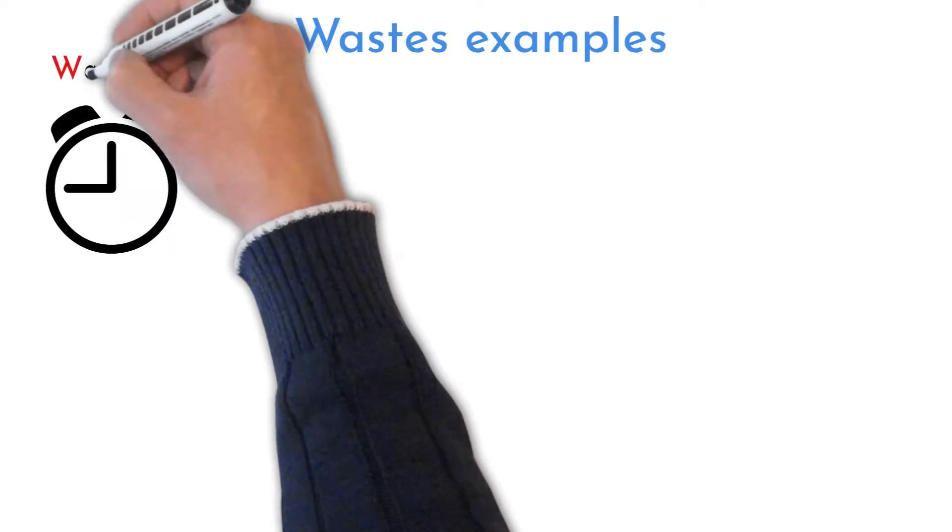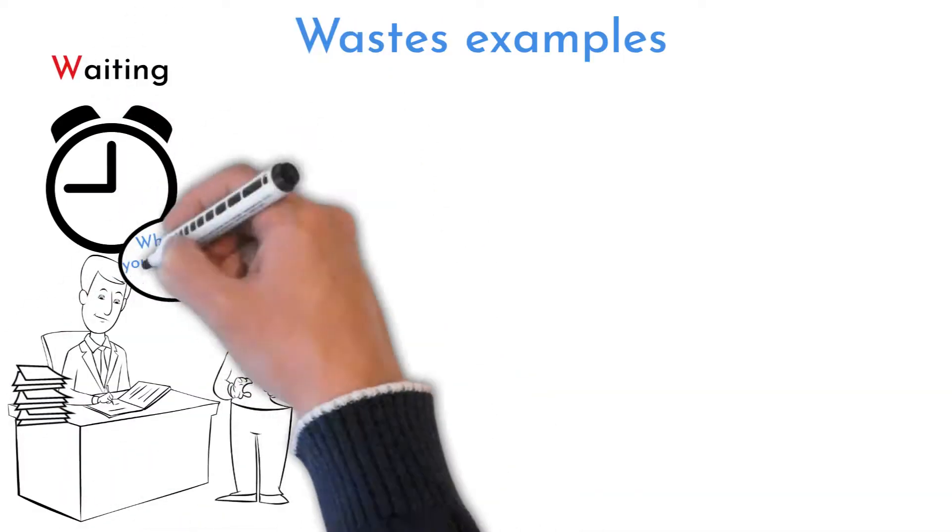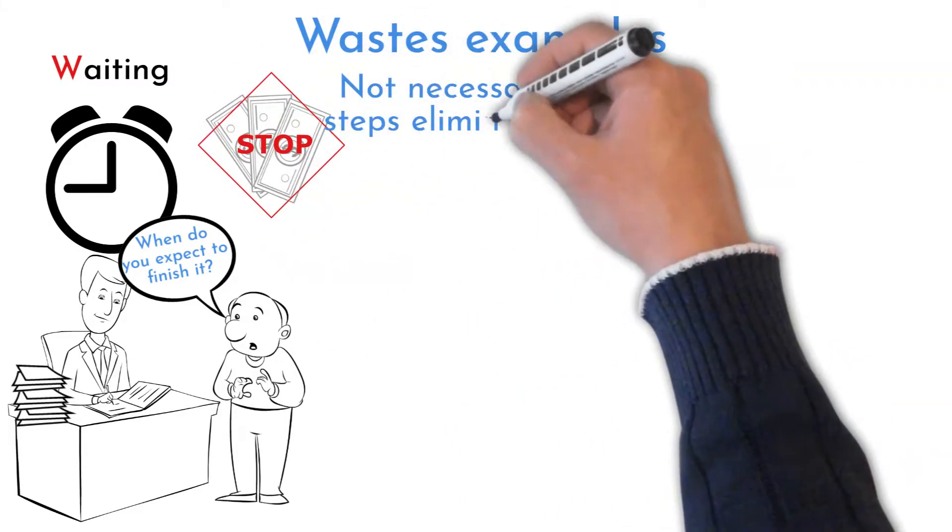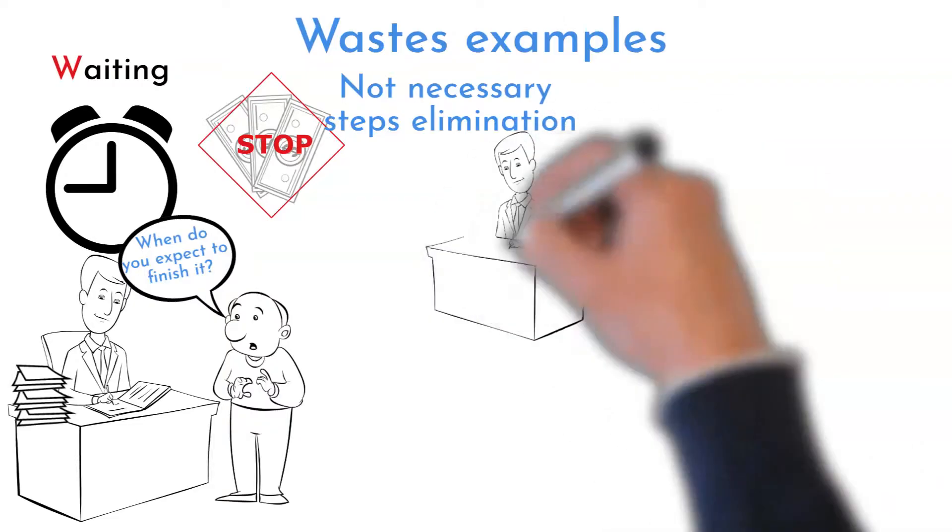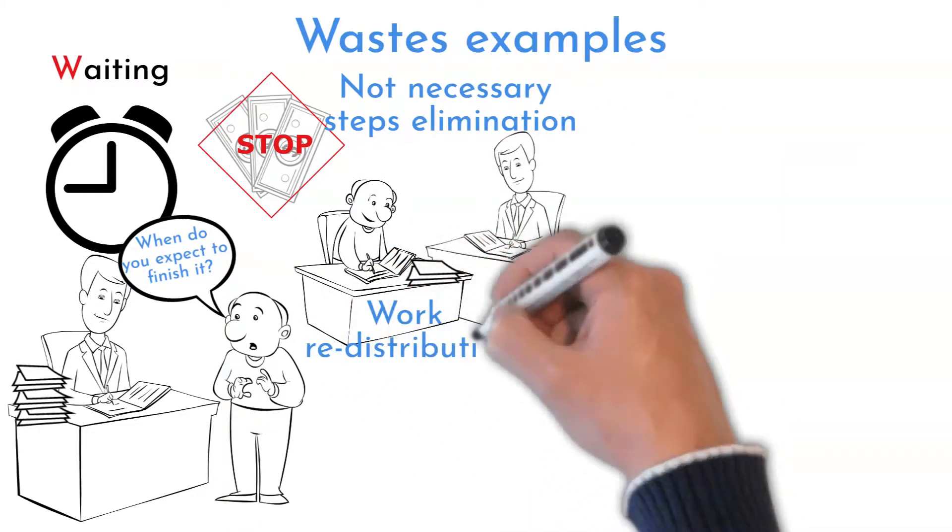Time losses created by waiting for previous or next step in the process is waiting waste. It is the time you pay but not adding any value. Try to speed up or level the slowest bottleneck processes to the same cycle time. If not possible, add shift, operator, or machine.